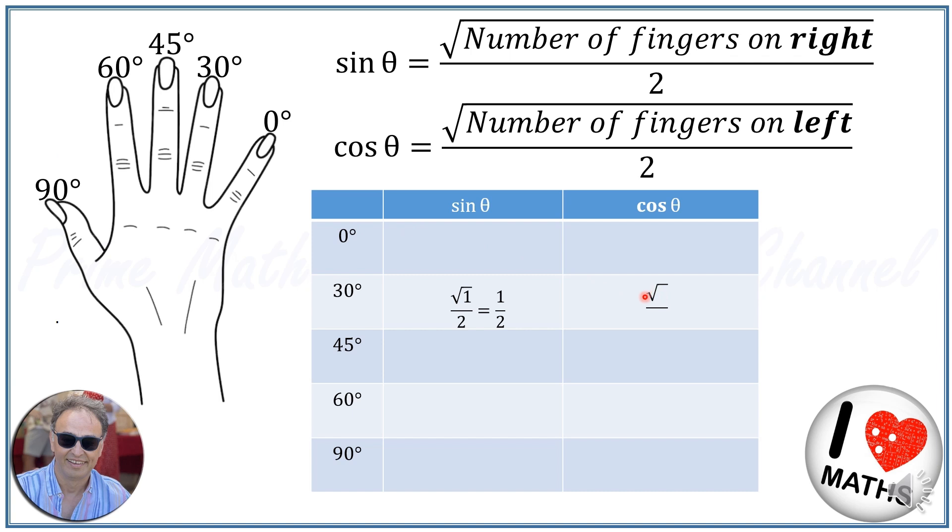And the cosine of 30 degree is, we need to count the fingers on the left hand side, so 1, 2, 3. It will be square root of 3 over 2. So sine of 30 degree is 1 over 2 or half, and cosine of 30 degree is square root of 3 over 2.